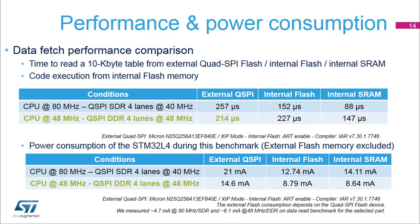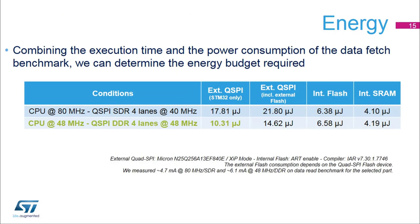To measure the performance of the Quad SPI memory interface, we use a simple benchmark reading a 10 kilobyte table from the Quad SPI flash memory, internal flash memory, and internal SRAM. The code itself is executed from the internal flash memory. In single data rate mode at 80 MHz, the internal flash memory is 40% faster than the external Quad SPI flash memory. But in double data rate mode at 48 MHz, the Quad SPI takes advantage of its pre-fetch mechanism and is a little bit faster than the internal flash memory. The STM32L4's power consumption is higher when using the Quad SPI flash memory because of I/O toggling. Combining the execution time and power consumption, we can obtain an overall picture of the energy budget. The DDR mode is the most optimized in terms of energy consumption for a given task.